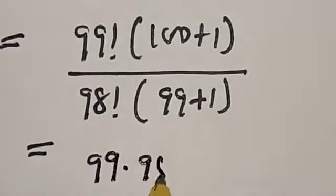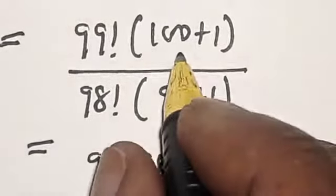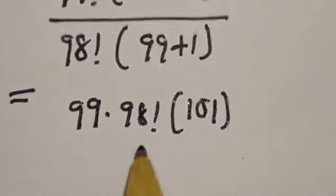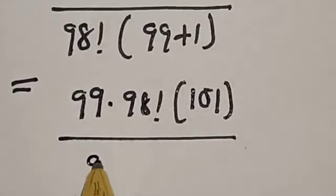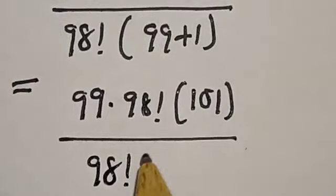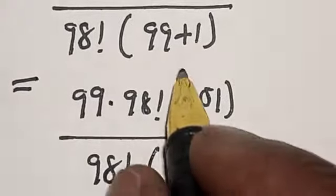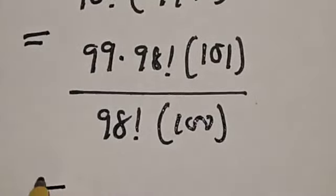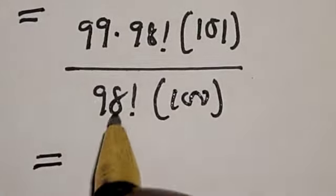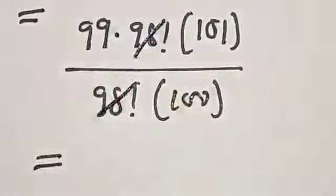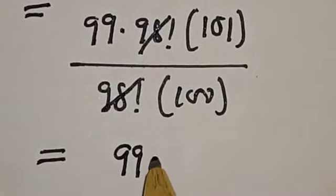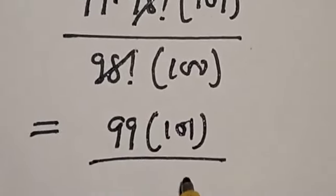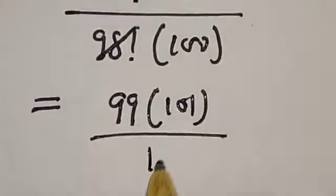This is equal to 99 factorial, which is 99 multiplied by 98 factorial, into 101, divided by 98 factorial into 100. The 98 factorial cancels, leaving us with 99 multiplied by 101 divided by 100.